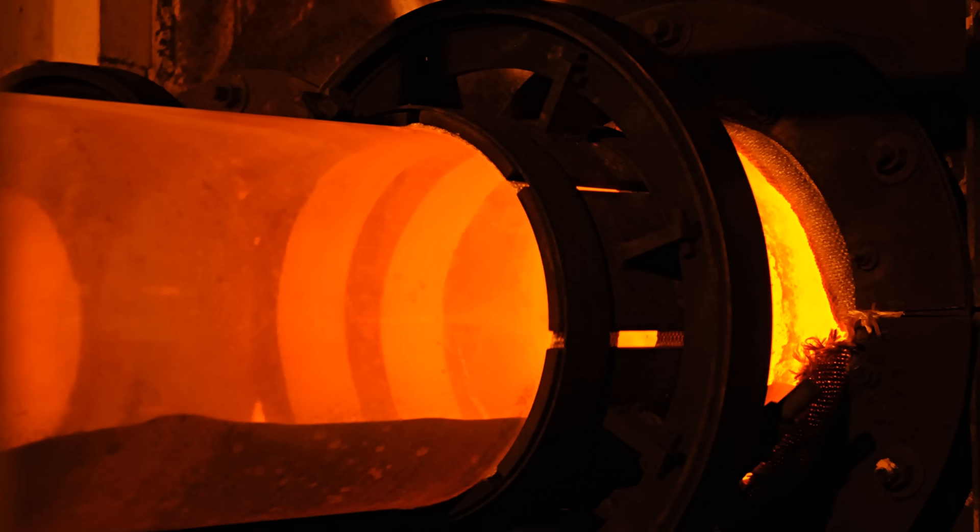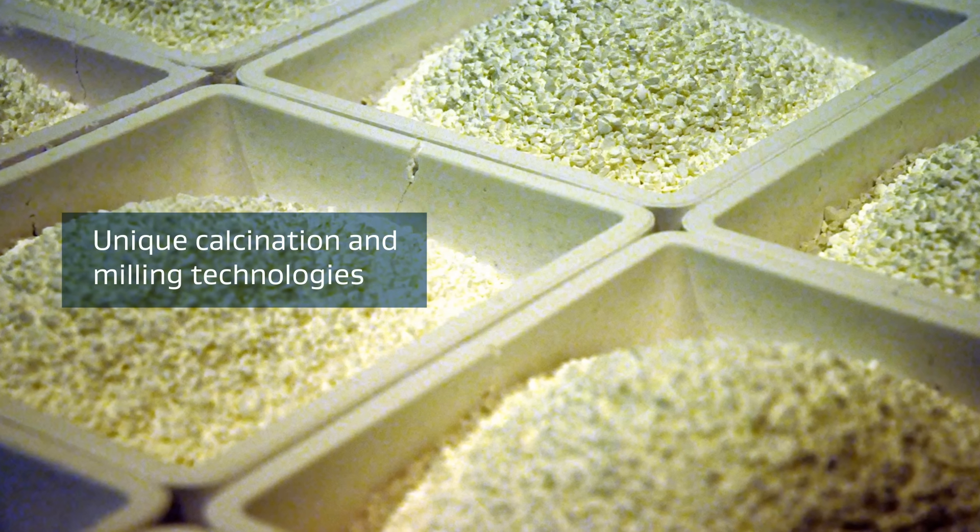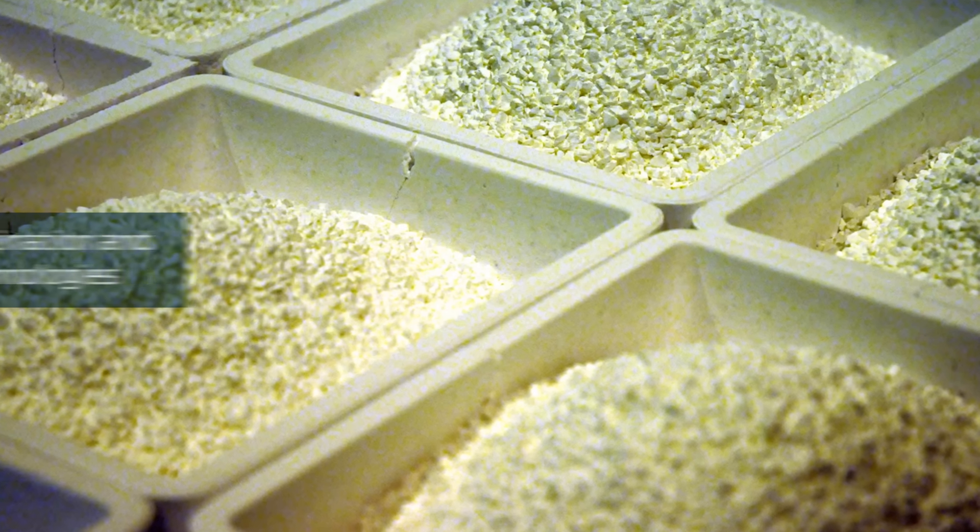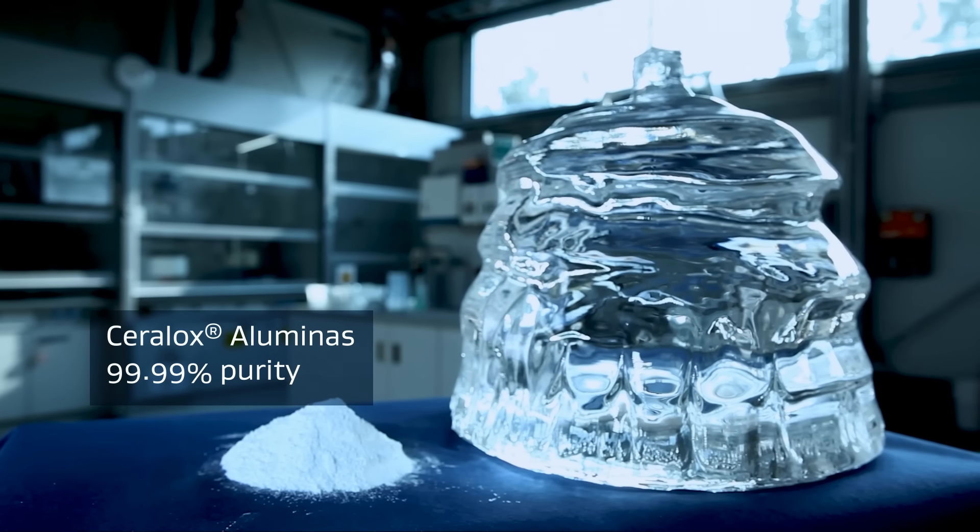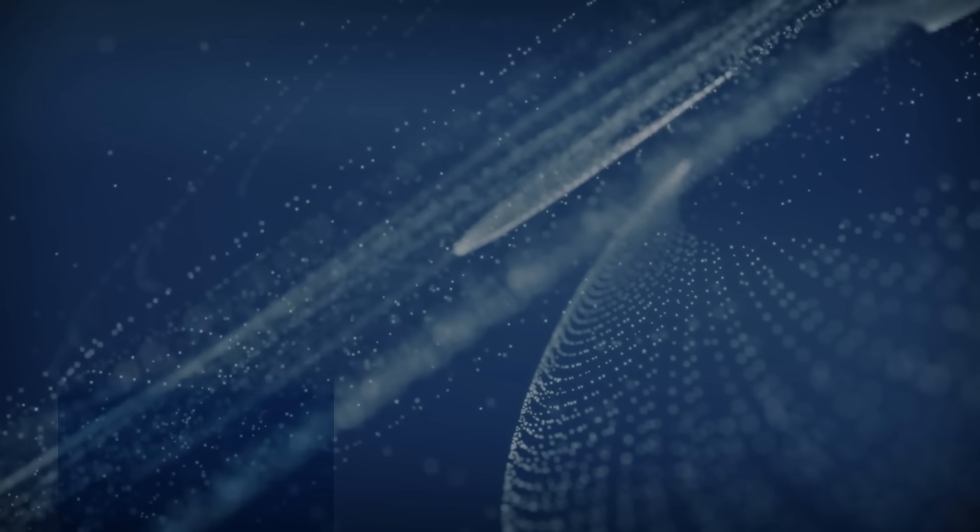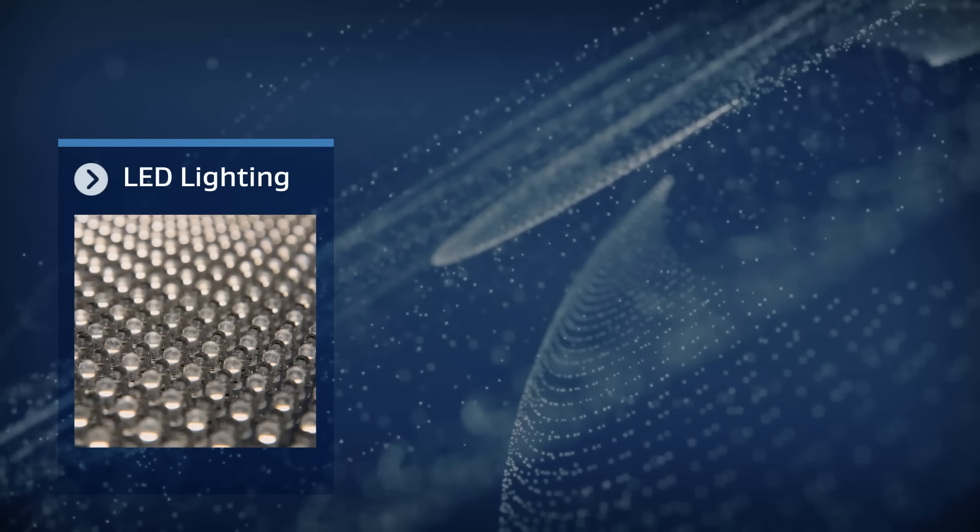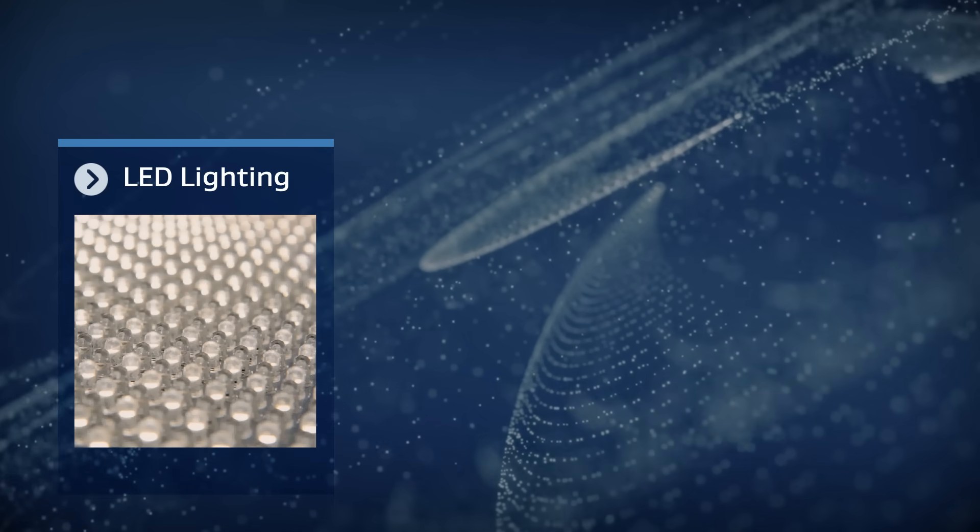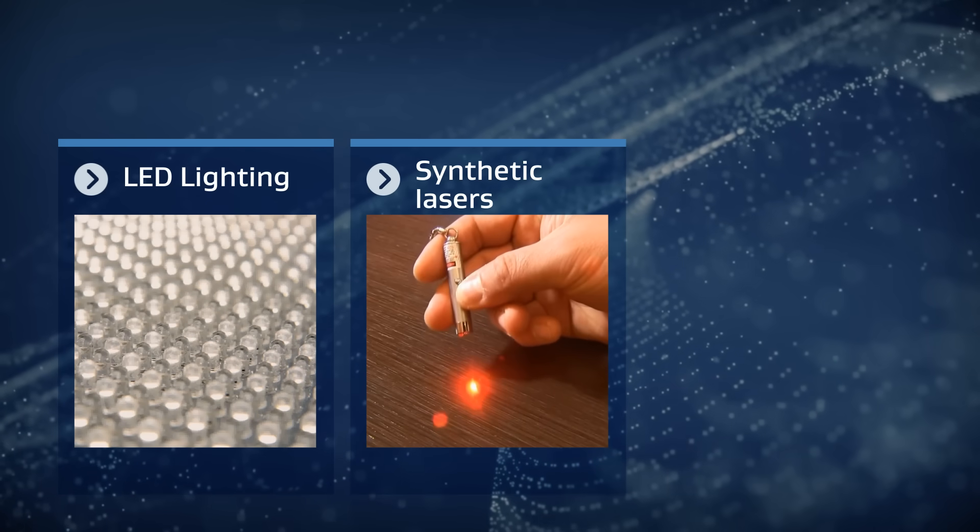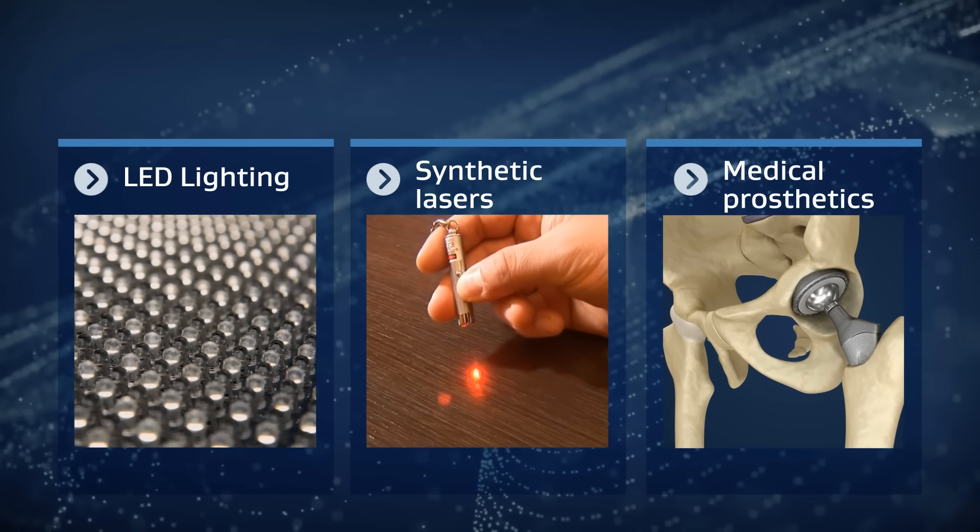Our unique production processes, in combination with calcination and milling technologies, produce a range of ultra-high purity aluminas. These are used across a wide array of products, ranging from synthetic sapphire, which forms a substrate for energy-efficient LED lighting and lenses for synthetic lasers, to ceramic powders for the manufacturing of medical prosthetics.